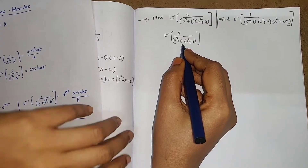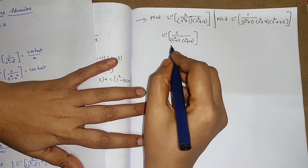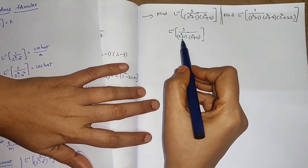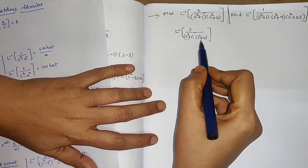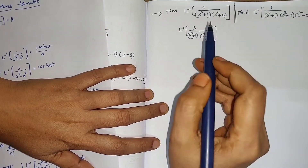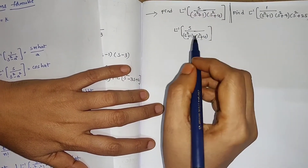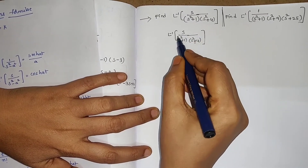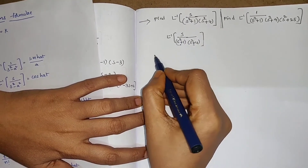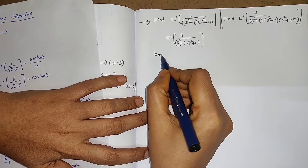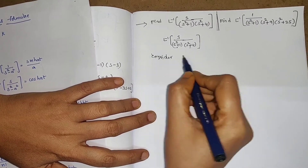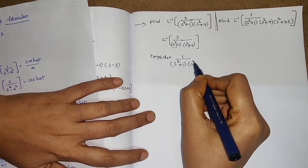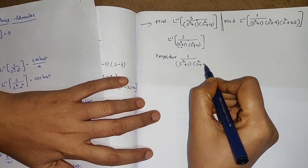It will be a lengthy process. In order to avoid that, we have a small technique available. In the denominator, if you observe quadratic polynomials like this, in that situation just consider the expression under L inverse other than S — that is, just consider 1 divided by (S² + 1)(S² + 4).